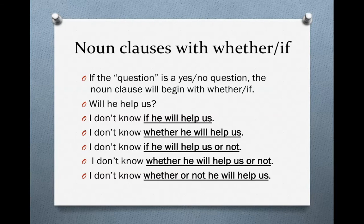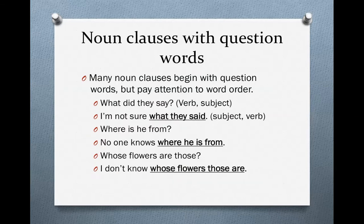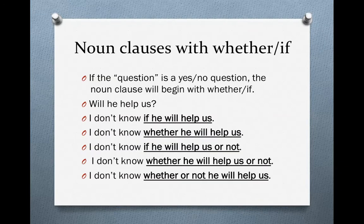When you're making noun clauses, usually what you're doing is taking a question and transforming it into a clause. Many questions begin with question words, so it's easy to turn them into noun clauses. Some questions, however, are yes-no questions. With yes-no questions, we don't have a question word to use, so instead we use the words 'whether' and 'if.' They basically mean the same thing, so you can use either one. So if our question is 'Will he help us?' and we want to turn that into a noun clause, we could say, 'I don't know if he will help us.' Notice that in the question it's verb then subject, but in the noun clause it's subject then verb: 'if he will help us.'